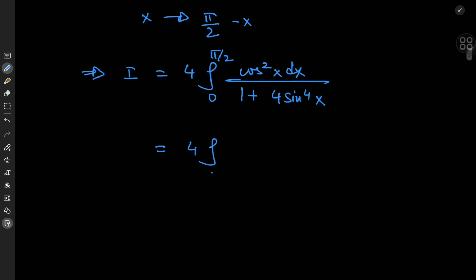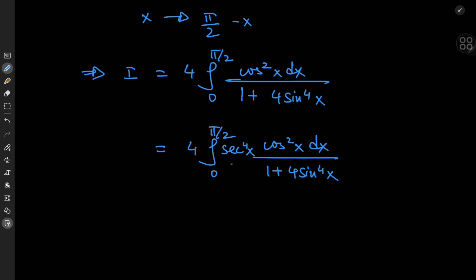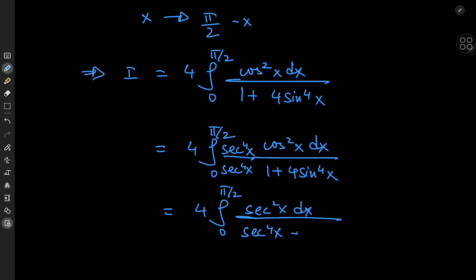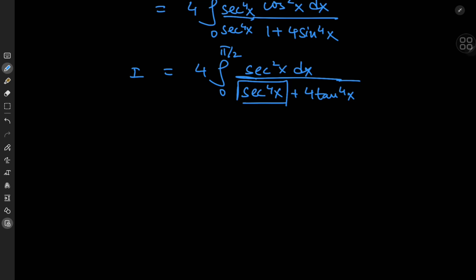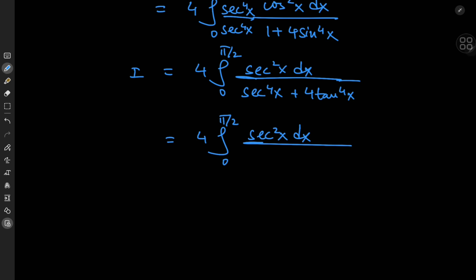We write this as 4 times the integral of cos²(x) dx divided by 1 plus 4sin⁴(x), and we expand by multiplying numerator and denominator by sec⁴(x). This yields 4 times the integral from 0 to π/2 of sec²(x) dx divided by sec⁴(x) plus 4tan⁴(x). We then expand sec⁴(x) = (1 + tan²x)², giving 4 times the integral from 0 to π/2 of sec²(x) dx divided by (1 + tan²x)² + 4tan⁴(x).